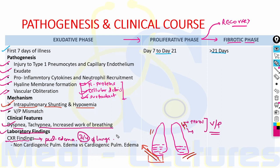To differentiate non-cardiogenic from cardiogenic pulmonary edema on X-ray: cardiogenic pulmonary edema shows cardiomegaly, pleural effusion, and pulmonary vascular redistribution — all of which are absent in non-cardiogenic pulmonary edema as seen in ARDS.